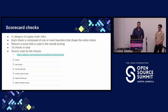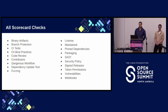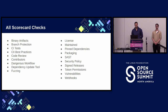There are 19 checks, hosted at scorecard/checks. To walk quickly through the checks for those unfamiliar with the project: there's the Binary Artifact check, which checks the project for the existence of risky binary artifacts in the source tree. There's the Branch Protection check that checks for the settings of branch protection in the repository. There's the CI Test check, which checks whether the project runs any tests in CI.